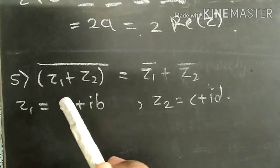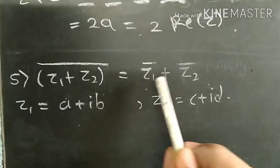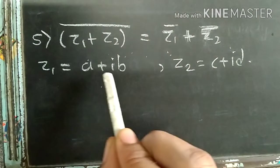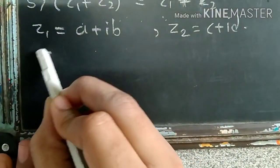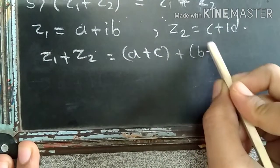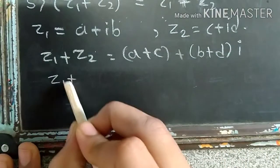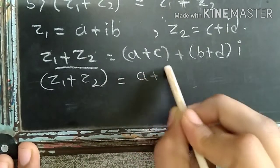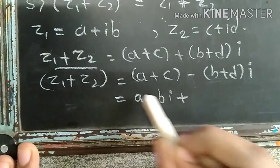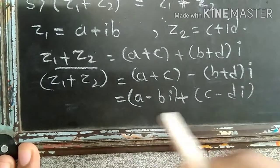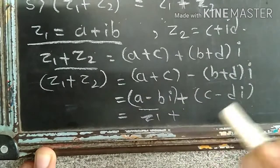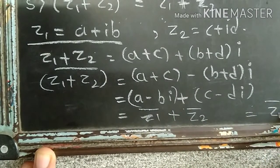Now the next property: the conjugate of Z1 plus Z2 equals the conjugate of Z1 plus the conjugate of Z2. Let Z1 equal A plus IB and Z2 equal C plus ID. Then Z1 plus Z2 equals A plus C plus I times B plus D. The conjugate of Z1 plus Z2 equals A plus C minus I times B plus D. This is nothing but A minus BI plus C minus DI, which equals Z1-bar plus Z2-bar. Hence proved.